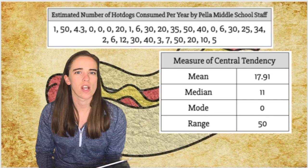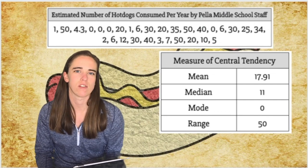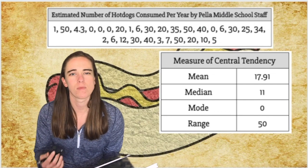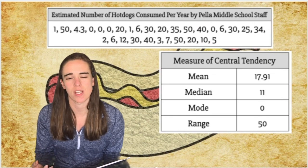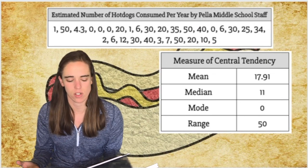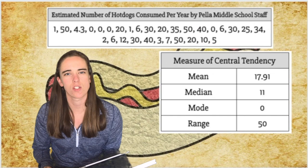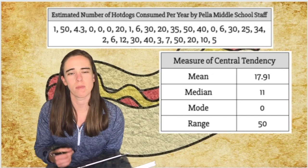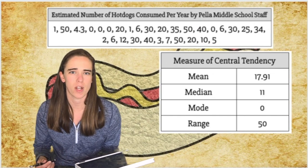There are lots of different ways that we can measure the central tendency of data. The question becomes: which one is best to represent the data? That depends on the situation. If you were trying to purchase hot dogs for a school picnic, you might want to use the mean to make sure that there are enough hot dogs available for everybody.